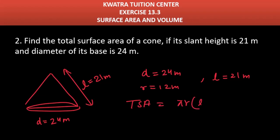TSA formula we have done, it was πr(L + r). So π value is 22 by 7, r value is 12, L plus r means 21 plus 12.